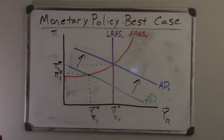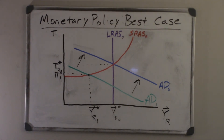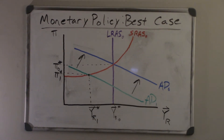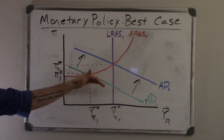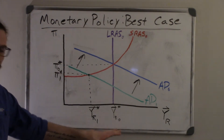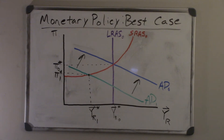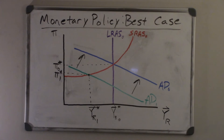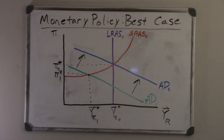That is the best case scenario. If we have this negative shock to aggregate demand, at least in theory, monetary policy could be used to just bring us back to where we were — back at our Solow growth rate, back at the same inflation rate we were used to. Everything is fine. However, there are some problems with this — some difficulties.